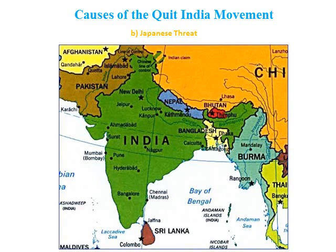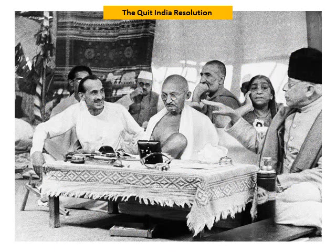The next cause for the Quit India Movement was the Japanese threat. During the Second World War, Japan was fighting against Britain. The Japanese army had attacked Burma, which was under British control, and was rapidly heading towards Assam. Gandhiji felt that the presence of the British in India was an unnecessary invitation for Japan to invade India. Therefore, many leaders were convinced that complete independence from the British was needed to avert the Japanese threat, leading to the decision to start a movement asking the British to quit India immediately.